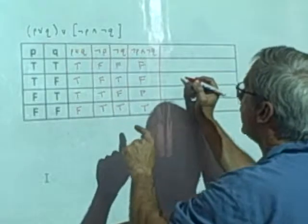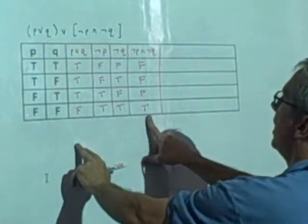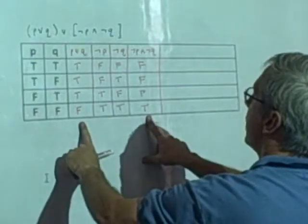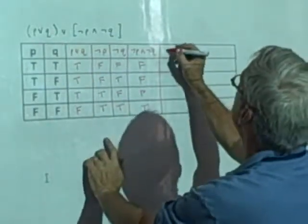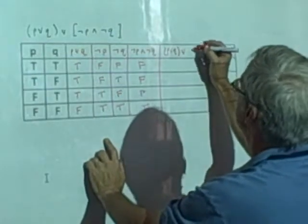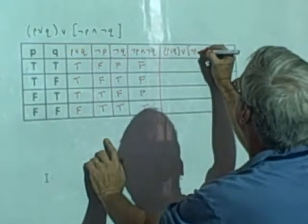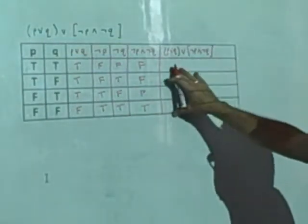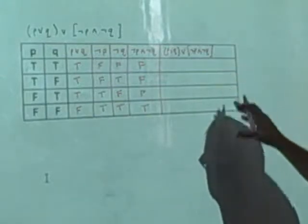Now, I'm going to look at the disjunction of this column, which is the square statement, and this column, which is the rounded one. So now I'm going to look at P or Q disjuncted with not P and not Q. Now, that's a lot of writing, and when you write your truth table, you may not have that wide of a column. So let me give you a little bit of a shorthand you can do for that.